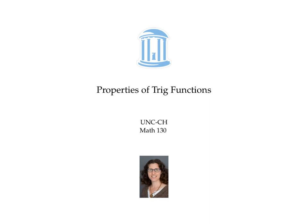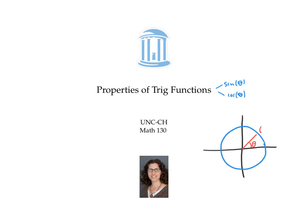This video gives three properties of the trig functions sine and cosine that can be deduced from the unit circle definition. Recall that the unit circle definition of sine and cosine for an angle theta is that cosine theta is the x-coordinate and sine of theta is the y-coordinate for the point on the unit circle at angle theta.